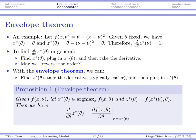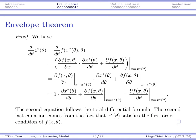Proposition one: given a function f, let x*(θ) be an optimal solution when theta is given, and let z*(θ) be the optimized objective value. Then, to find how theta affects z*(θ), you first take the derivative of f with respect to theta assuming x is a constant, and after finding that derivative, plug in the optimal solution as a function of theta.